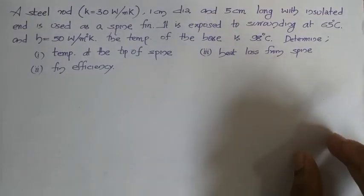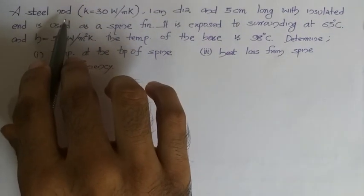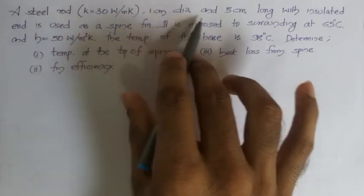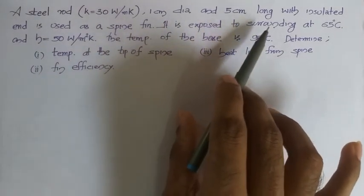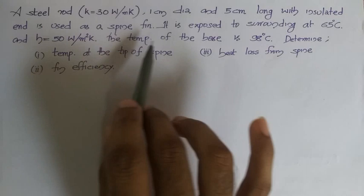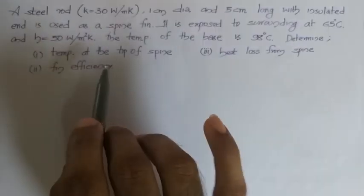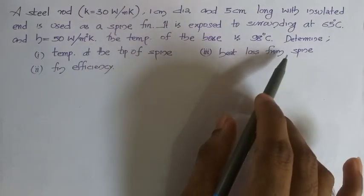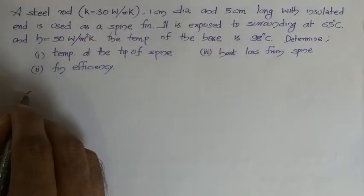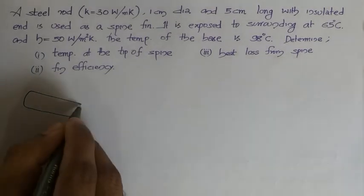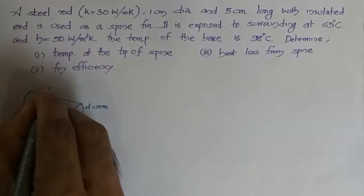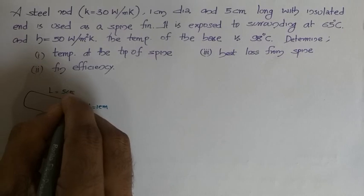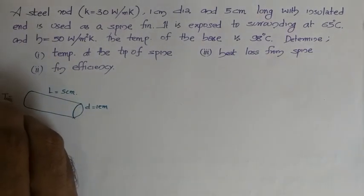In this video we will be solving problems on fin effectiveness and efficiency. We have a problem where a steel rod with thermal conductivity given, 1 centimeter in diameter and 5 centimeter long with insulated end, is used as a spine. It is exposed to surroundings at 65 degree Celsius. The temperature of the base is also given. We have to determine the temperature at the tip of the spine. The fin is of circular shape whose diameter is 1 centimeter and length is 5 centimeter, fixed to a base.